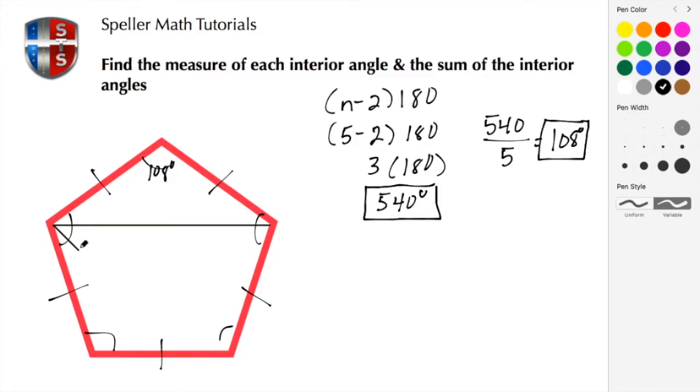So each one of these triangles we know has a measure—let me change the color—each one of these triangles has a measure of 180 degrees and we have three of them. And notice that's exactly what we have here: 3 times 180 to give us the 540 degrees for the sum of the interior angles.